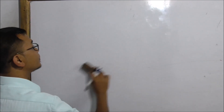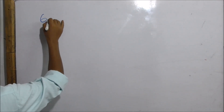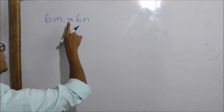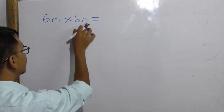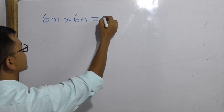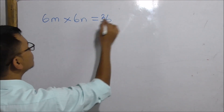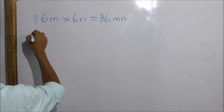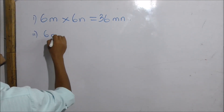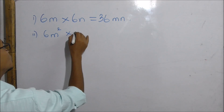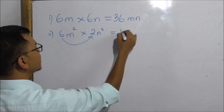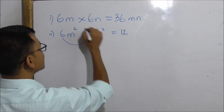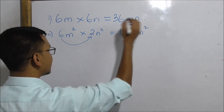There are 4M and 6N. We can multiply: 6M into 6N. We multiply 6 by 6 to get 36. M into N gives MN. So 6M squared into 2N squared: we multiply to get M squared N squared, giving us 36M squared N squared.